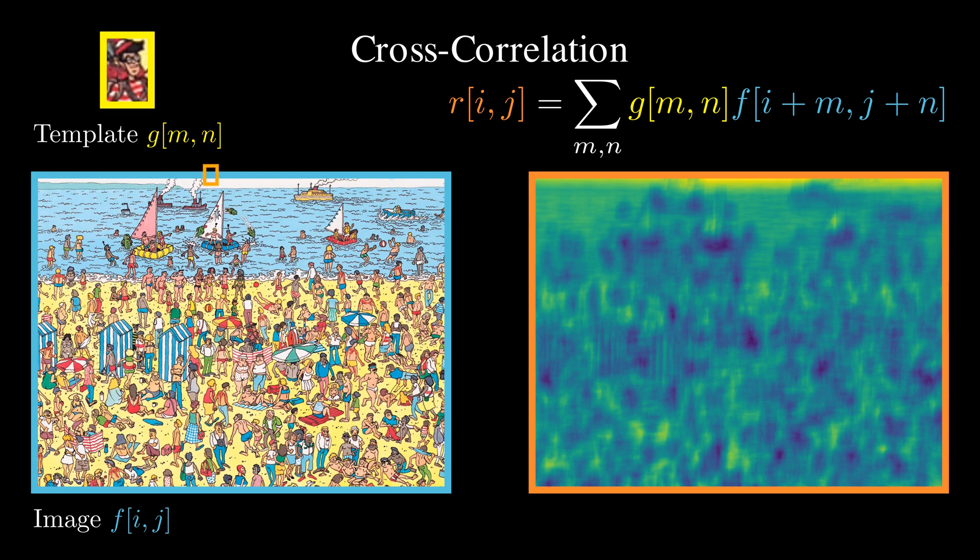But wait, something's wrong. The method doesn't actually find Waldo. Instead, it just highlights bright areas. That's not what we want. The issue lies in the pixel intensity values in the template. Since they are all positive, the algorithm naturally favors bright regions.